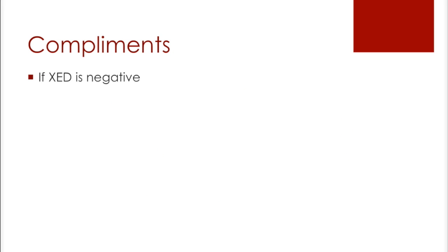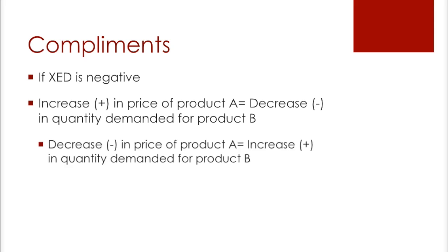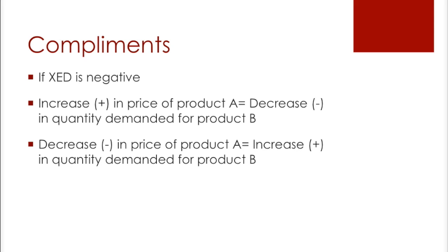Next we have complements. If XED is negative, we can see that two goods are complements. This means that an increase in the price of one product means a decrease in the quantity demanded for another product. This can also mean that a decrease in the price of one product equals an increase in the quantity demanded for another product.